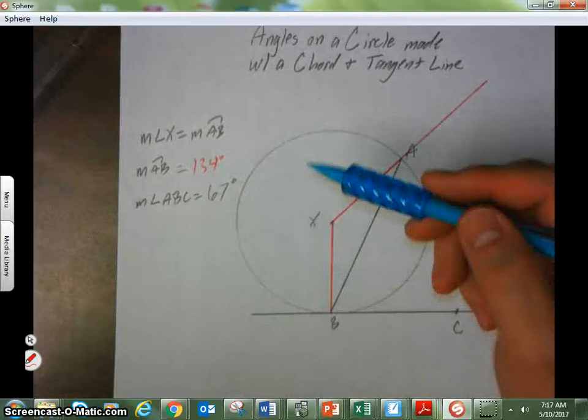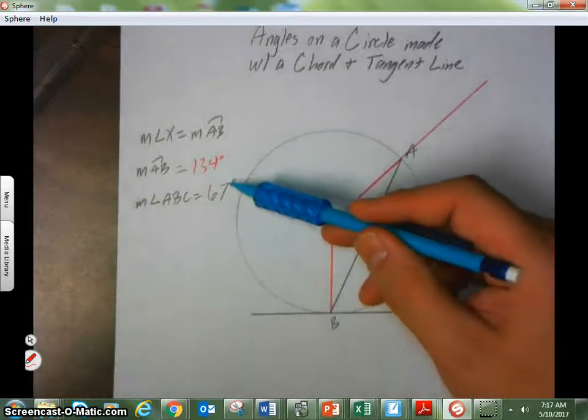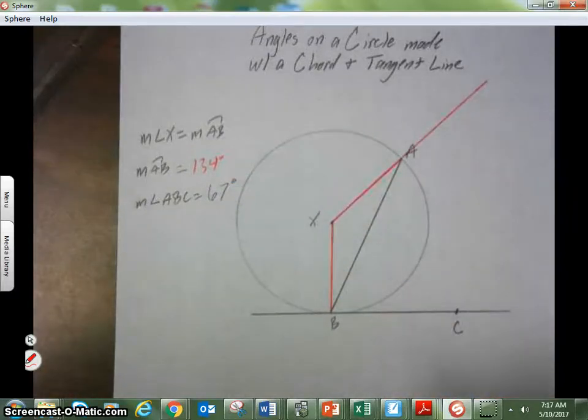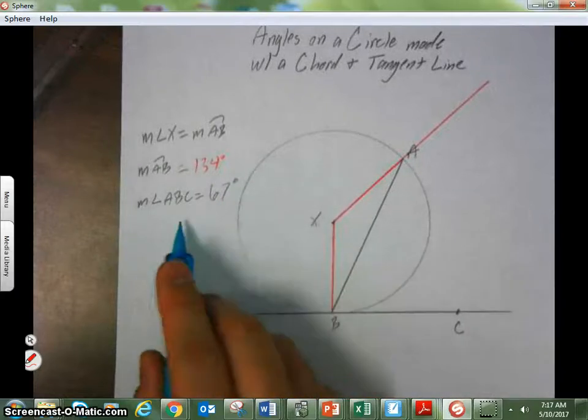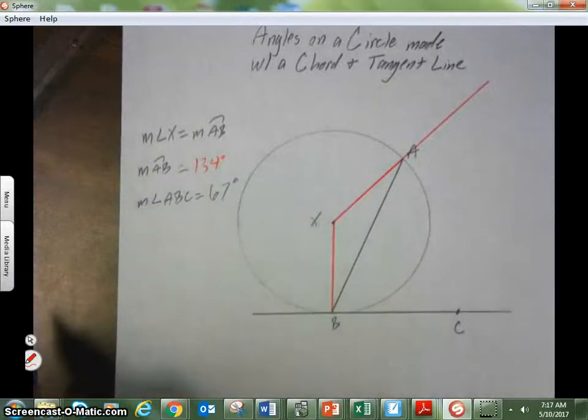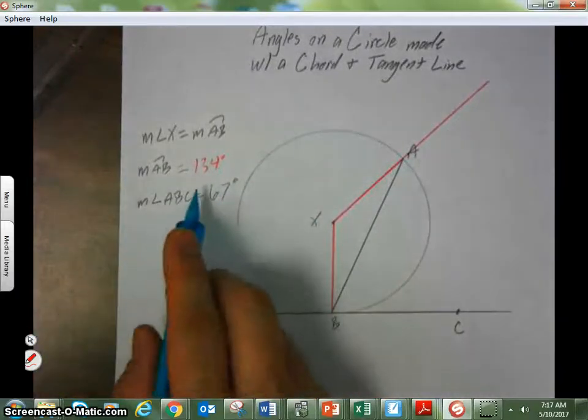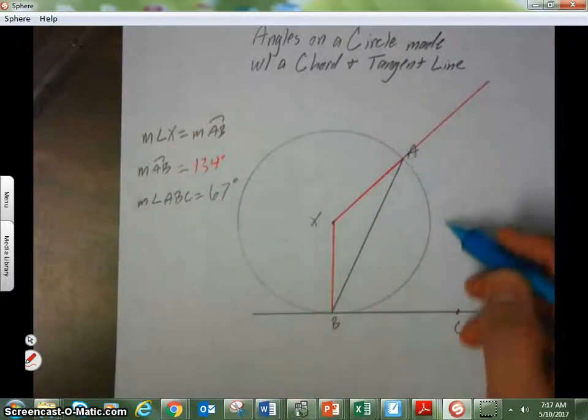And, if I compare the relationship between these two angles, we can conclude that the angle formed between a chord and a tangent line will be half of its arc.